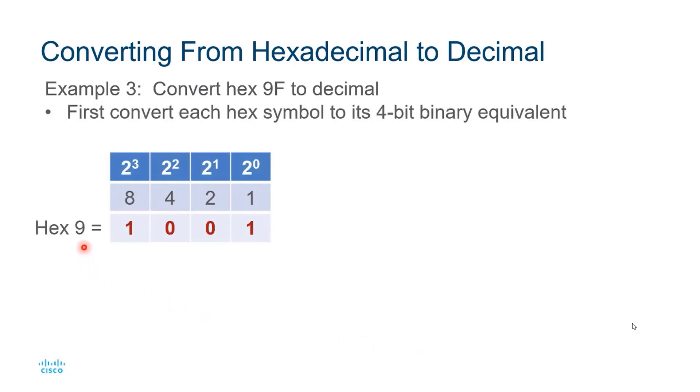I have hex 9, which is the same as decimal 9, and that gives me 1001. And then I have hex F, which is equivalent to decimal 15, and that gives me 1111 in binary.